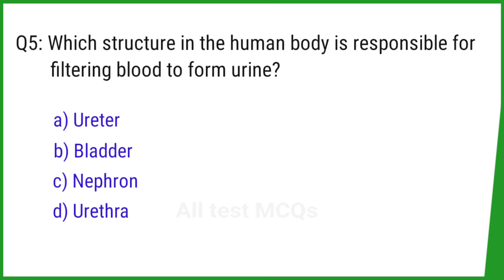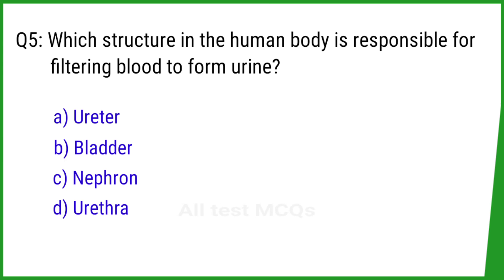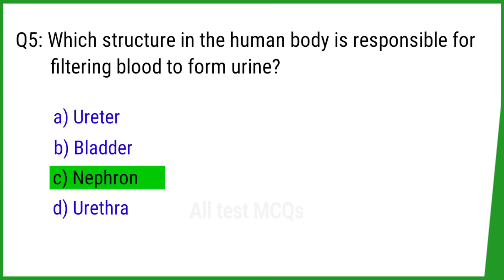Question number 5. Which structure in the human body is responsible for filtering blood to form urine? The right answer is option C: Nephron.